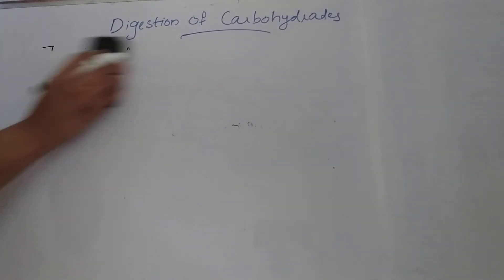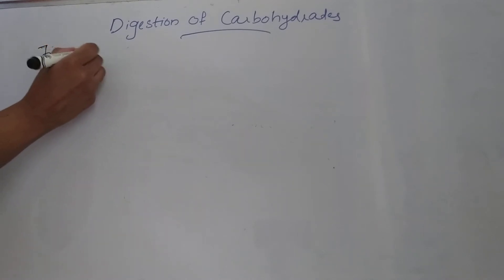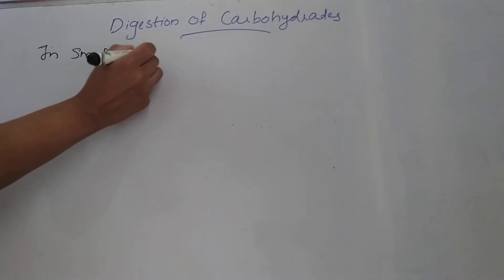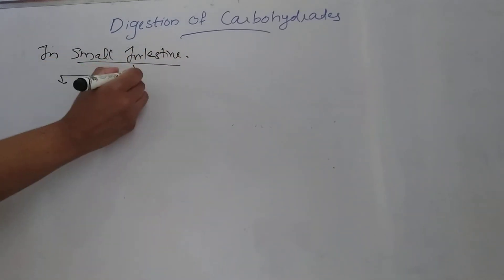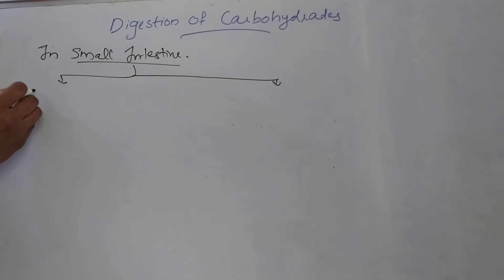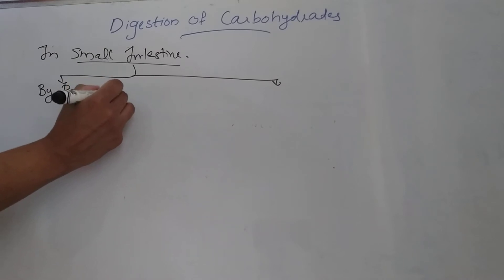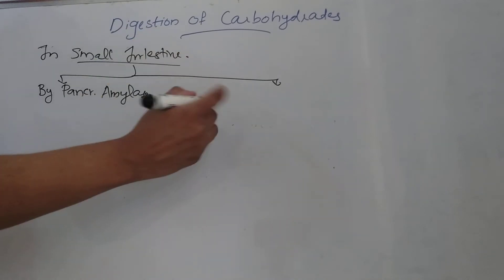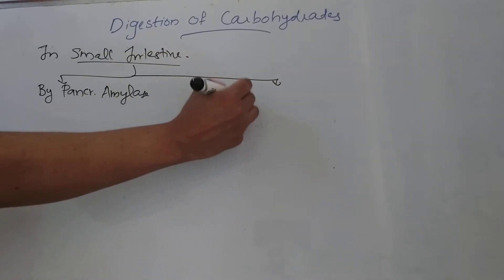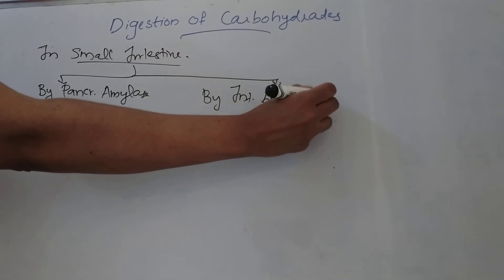The next step is digestion in the small intestine. Here, there are two phases: the first phase is digestion by pancreatic amylase, and the second phase is digestion by intestinal brush border enzymes.